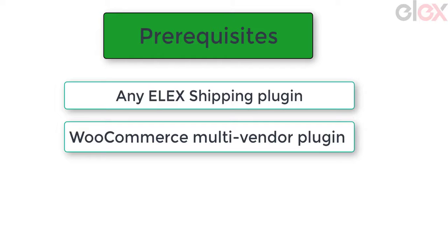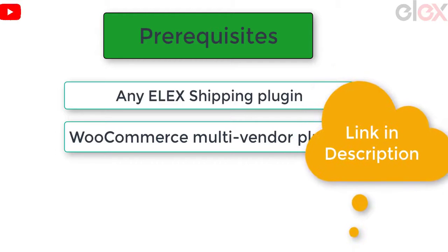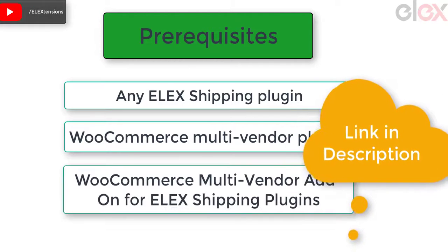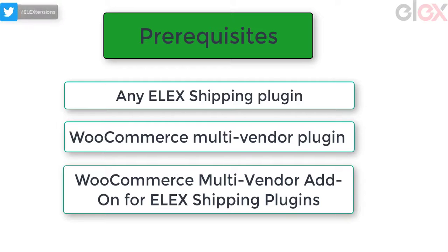You also need any compatible WooCommerce multi-vendor plugin like WooCommerce Product Vendors, Dokan Multi-Vendor plugin, WCFM Marketplace, or WC Vendors. Check out the respective multi-vendor pages for more about setting up the plugins on your WooCommerce store — links in the description. And of course, our WooCommerce multi-vendor add-on for LX shipping plugins. Firstly, install the prerequisite plugins and get them activated.